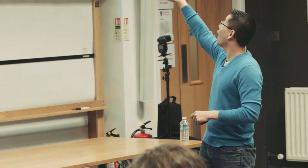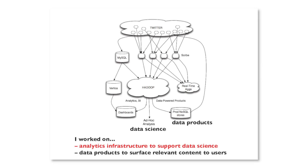I'll tell you a little bit about what I worked on there. This is a high-level architectural overview of the Twitter stack. At the top is what you imagine when you interact with the Twitter service — the API endpoints, the web servers, etc. In the middle there is a big data collection layer that sucks in all the data into the Hadoop data warehouse, which is the central gathering point for all the data — the logs, the tweets, the graph, everything. This is used for what people are calling data science and the creation of data products. I worked on the team that managed the analytics infrastructure to support data science and data products.